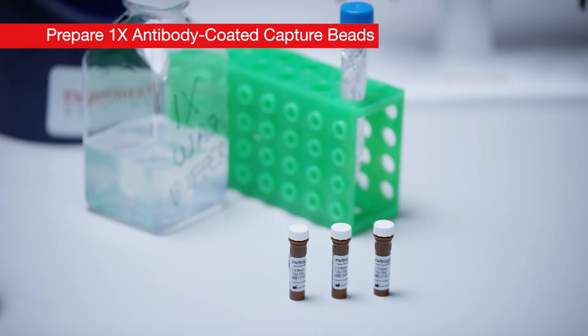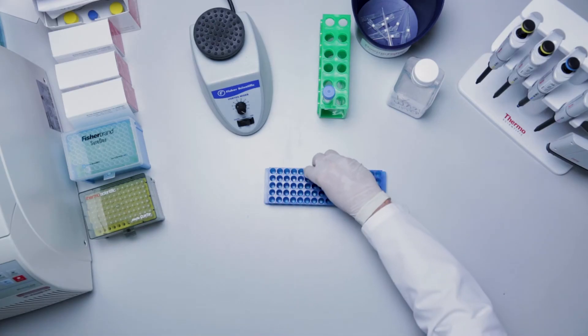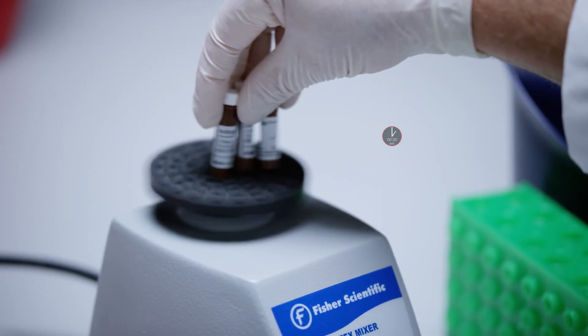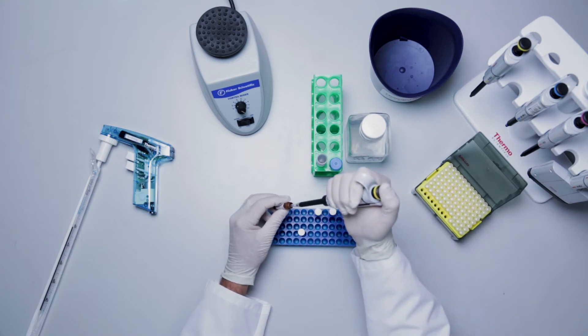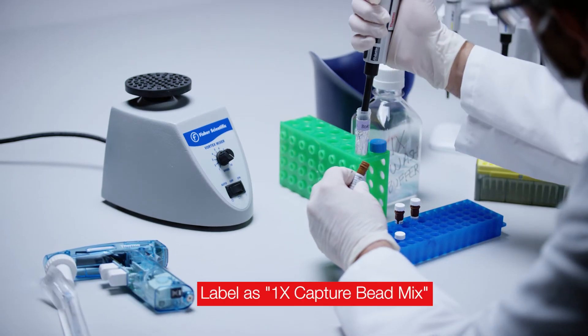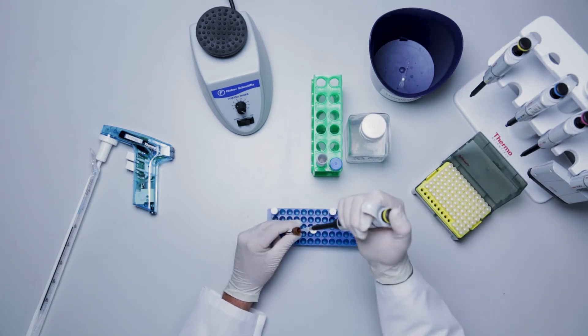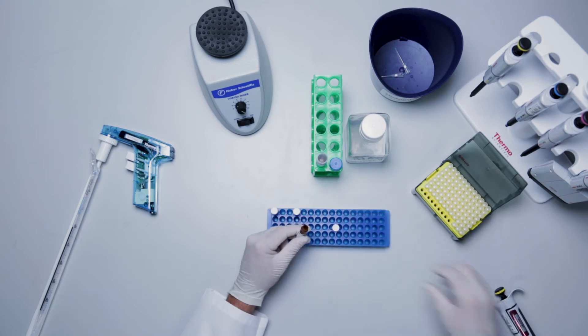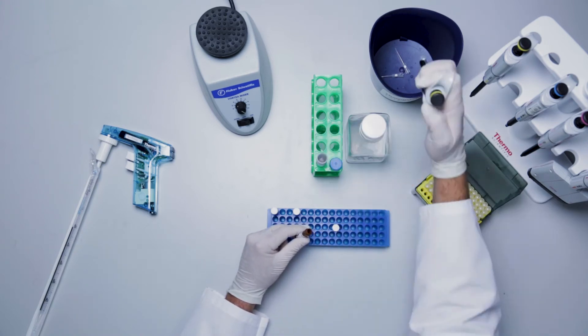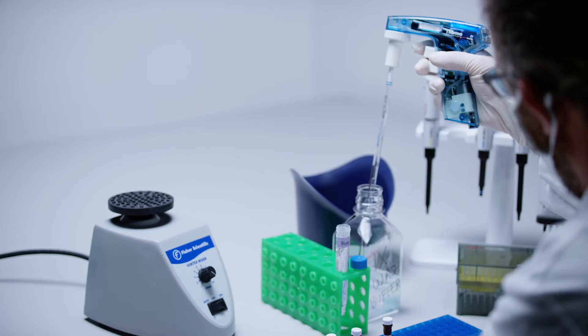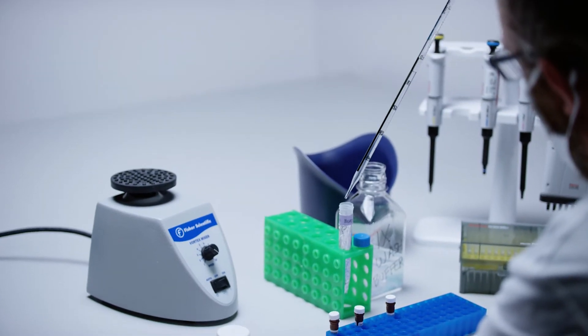Simplex kits are provided with concentrated 50x capture beads. Therefore, dilution is required. Vortex each 50x simplex bead vial at high speed for 30 seconds. Label a 15 milliliter tube as 1x capture bead mix. Add 100 microliters of each 50x simplex bead vial to the 15 milliliter tube if using a whole plate. Otherwise, adjust the volume accordingly. Fill up with 1x wash buffer to a final volume of 5 milliliters.